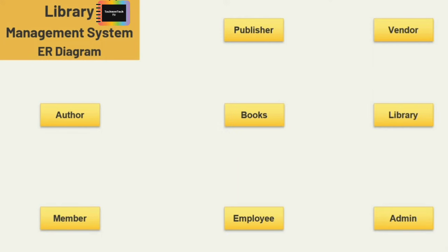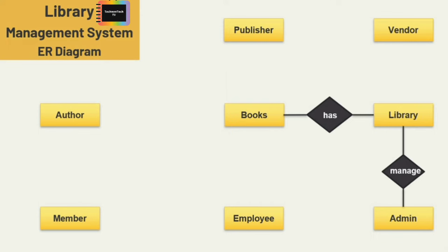Here I have taken eight entities — you can add more according to your needs. Now let's define the relationships between all the entities. First, the relationship between library and book: library has books. Next, admin manages library, so I'm adding the relation 'manage' between library and admin. Admin also adds different employees in the database, so I am adding the relation 'add' between admin and employee — admin adds employee.